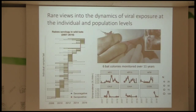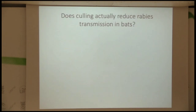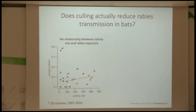This gives us pretty unique insights at both the individual level and the bat colony level. We can see individual bats recaptured through time over a course of about a decade, tracking their individual status and how long they have antibodies. At the population level we can see big fluctuations in seroprevalence which probably correspond to the virus being introduced into those bat colonies.